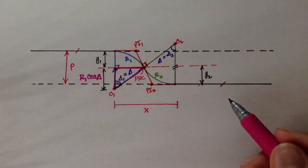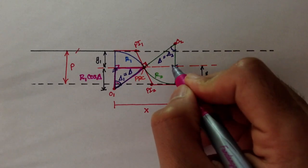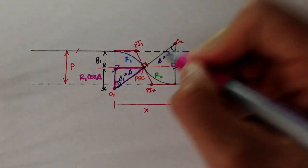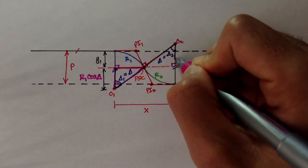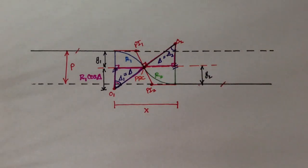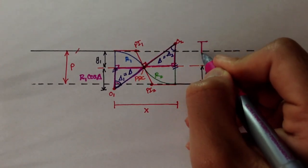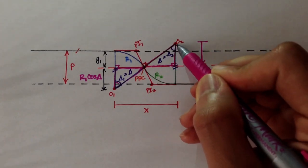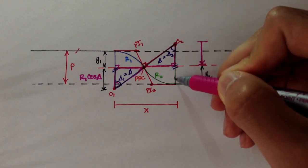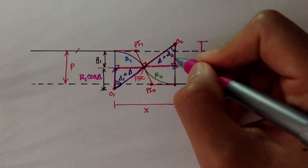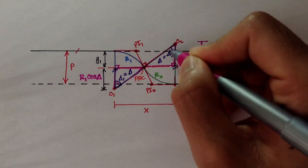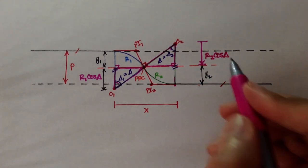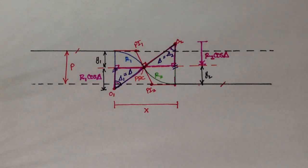The same applies to the other curve. If the orange dashed line is perpendicular to the green tangent line, I notice another triangle where the hypotenuse is R2. So that corresponding distance is R2 cosine delta 2, and since delta 2 equals delta, I'll just write R2 cosine delta.